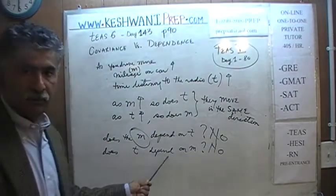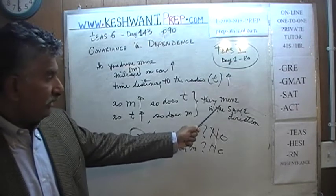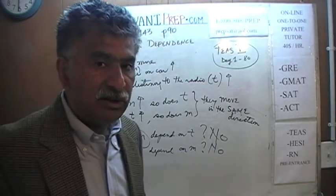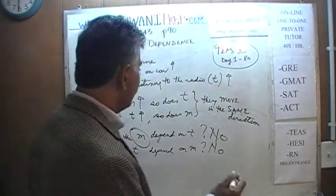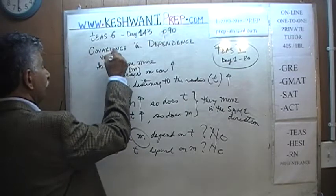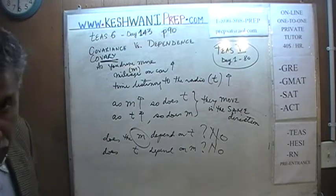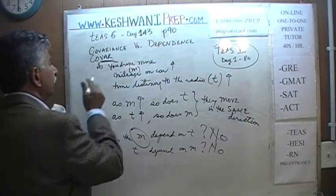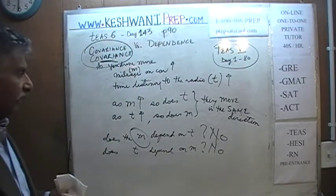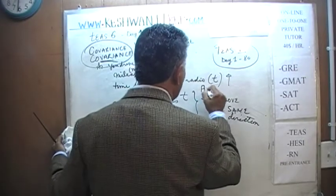There is no dependence here. But there is the observation that they move in the same direction — they vary together. They change in value together. Vary means to change, and they change together. There is a covariance, and in this case the covariance happens to be positive. They move in the same direction — there is a positive covariance.